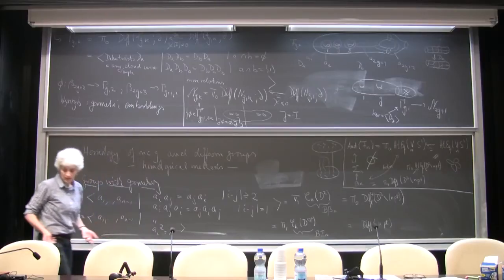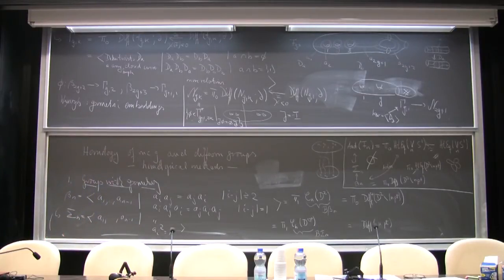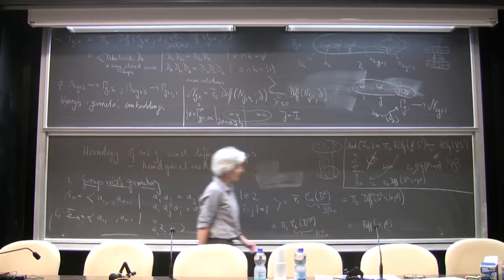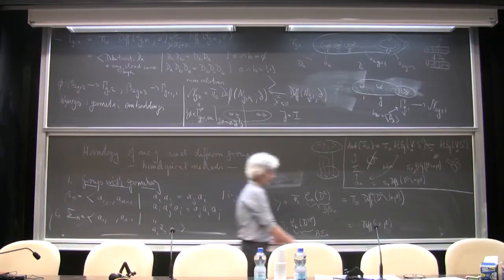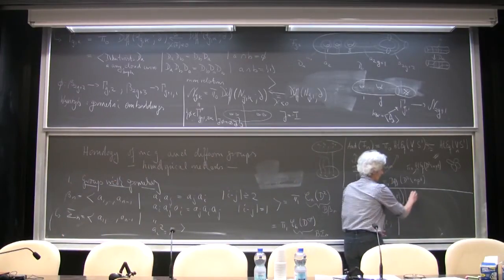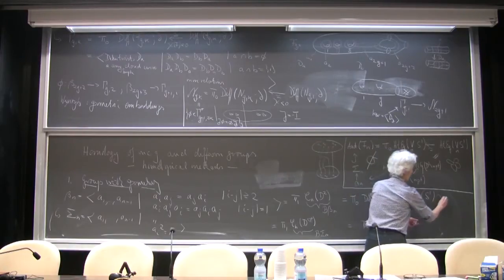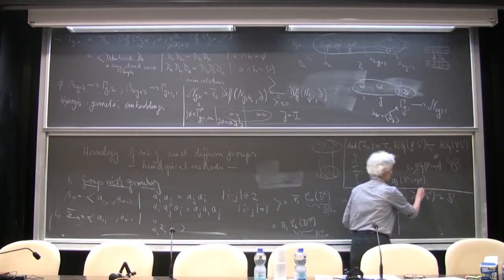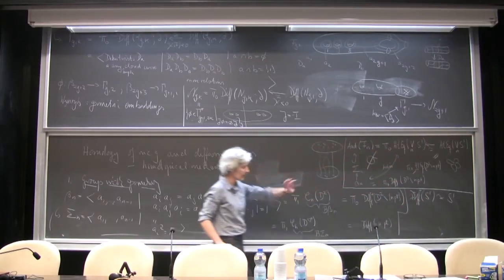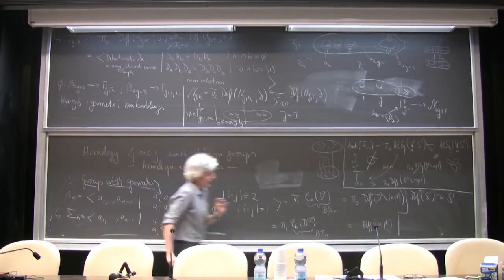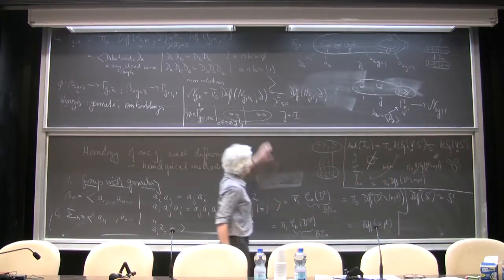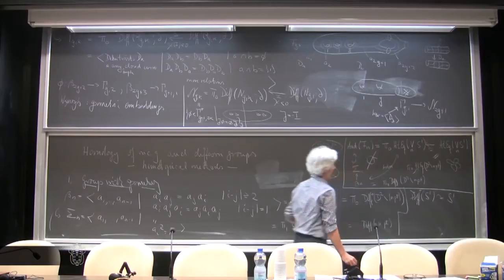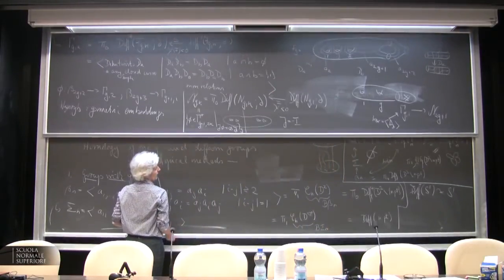Diffeomorphism groups of manifolds are obviously a fundamental object, and you might ask what we can say about diffeomorphism groups of a given manifold. In dimension zero, that's the symmetric group. The diffeomorphisms of S¹ are homotopic to S¹ — essentially the only thing I can do up to homotopy is rotate S¹. Then you might ask about higher-dimensional ones.